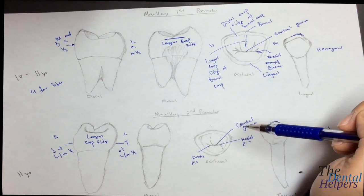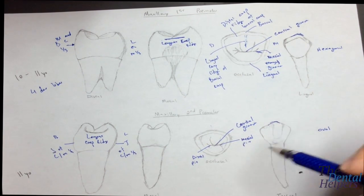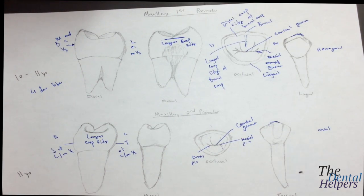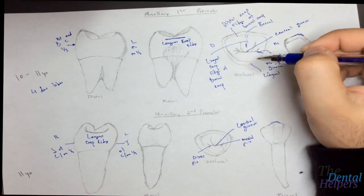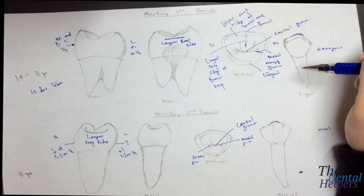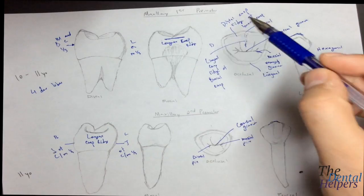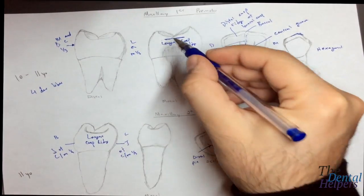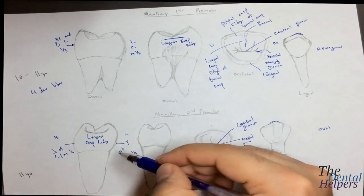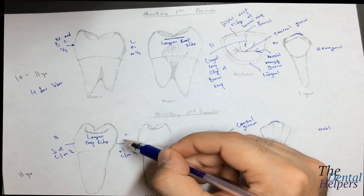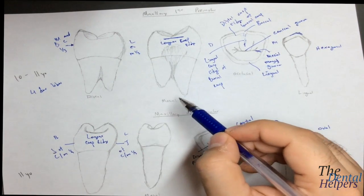Another way to distinguish the maxillary first premolar is that it typically has two roots — a buccal and lingual root. There are also two triangular ridges leading to a transverse ridge. Looking at the crown from a proximal view — either distal or mesial — you'll see it's more of a trapezoid shape in both premolars. The difference is that the maxillary second premolar is symmetric due to equal cusp heights, while the maxillary first is not.